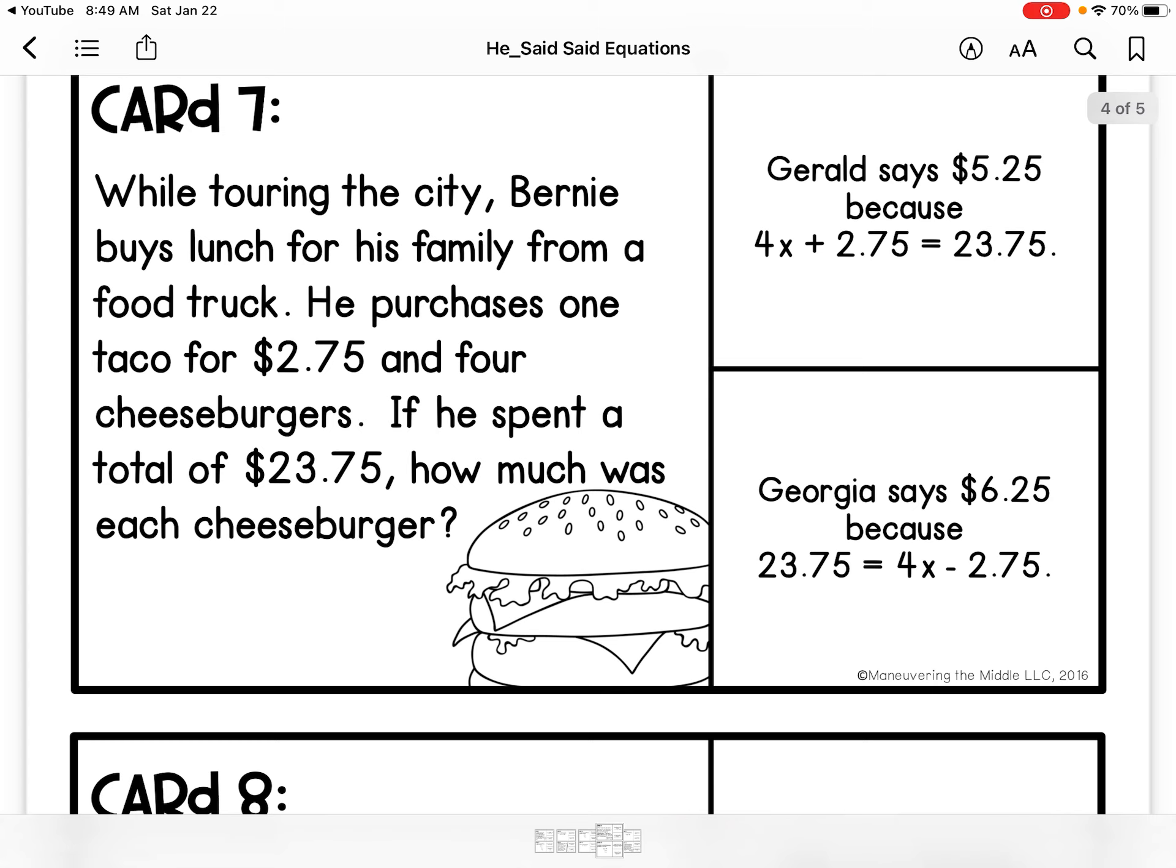While touring the city, Bernie's buying lunch for his family from a food truck. He purchases one taco for $2.75 and four cheeseburgers. And spent $23.75. How much was each cheeseburger?